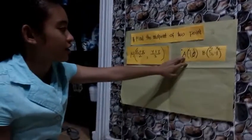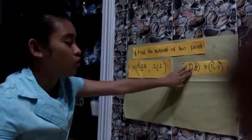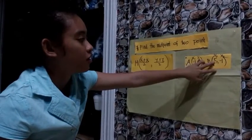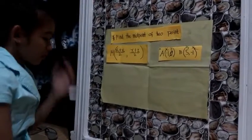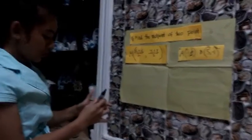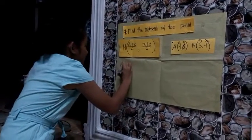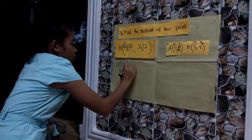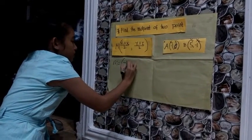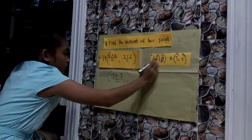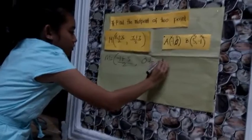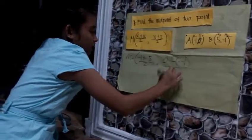Find the midpoint of 2 points: A(-1, 0) where x₁ is negative 1 and y₁ is 0, and B(5, -1) where x₂ is 5 and y₂ is negative 1. So M equals (x₁ plus x₂) divided by 2, and (y₁ plus y₂) divided by 2. That is: negative 1 plus 5, and 0 plus negative 1, divided by 2.